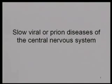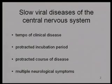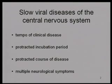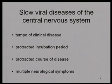We're going to change tempo somewhat and talk about viral diseases of the central nervous system that have very long incubation periods — so-called slow viral diseases. The tempo of the clinical disease is very long: there's a protracted incubation period and frequently a protracted course of disease — not a rapid one or two days, but weeks, months, or sometimes years.